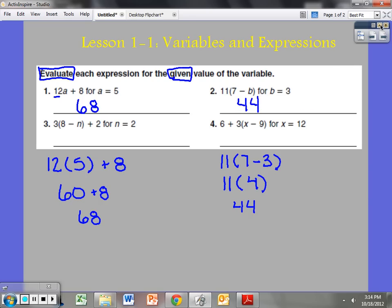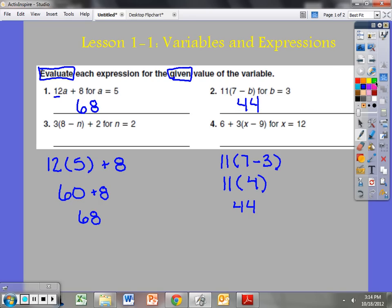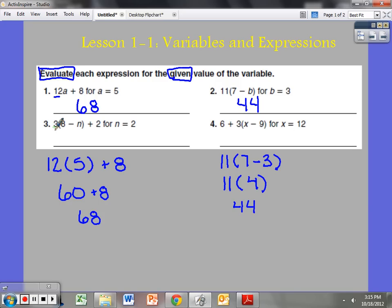Let's go and take a look at this next one. So I have 3 times, and I know that's multiplication because there's nothing in between the parentheses and that whole number there. So I'm going to multiply 3 times 8 minus n, close parentheses, plus 2. They had more stuff here. So I see n is equal to 2. So I'm going to substitute in that 2 for n now. So if I were to write this, I have 3 times open parentheses 8 minus 2, close parentheses, plus 2.